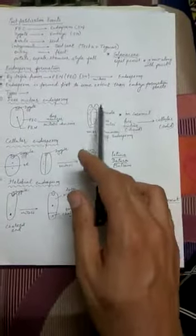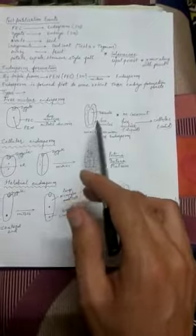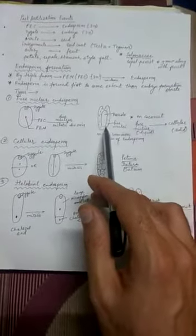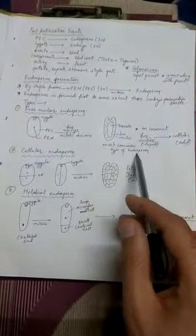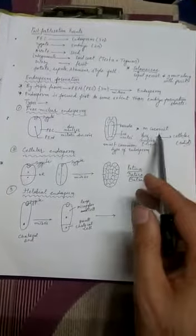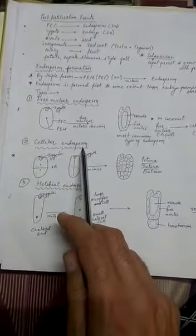Coconut is a beautiful example of two types of endosperm — according to the initial stage and the final stage. In free nuclear endosperm, the nuclei remain as such; there is no cytokinesis or cell wall formation. This is the most common type of endosperm in most plants, but in coconut it is followed by cell wall formation.